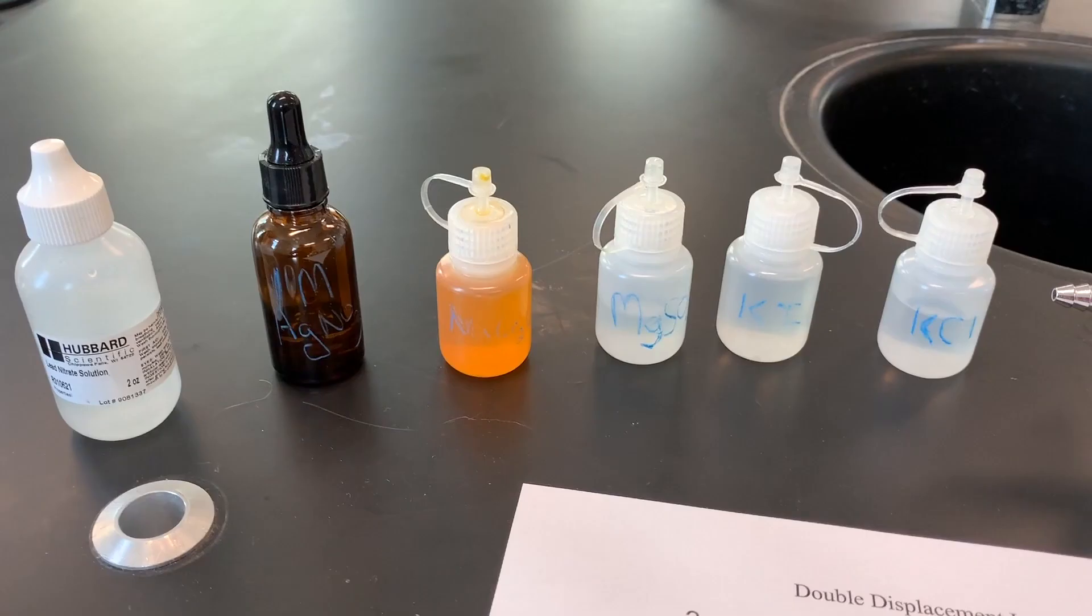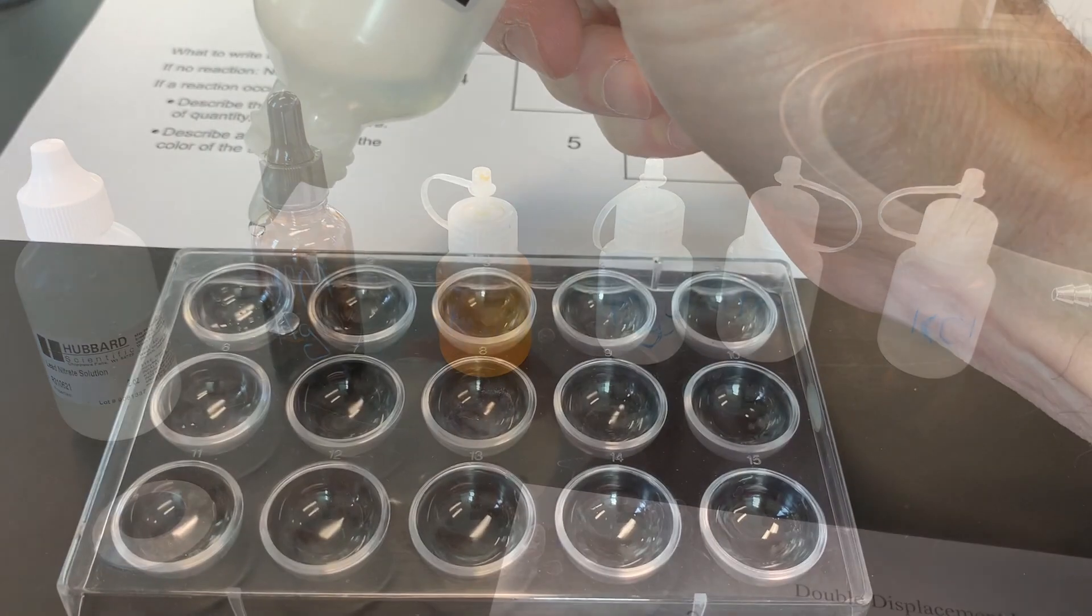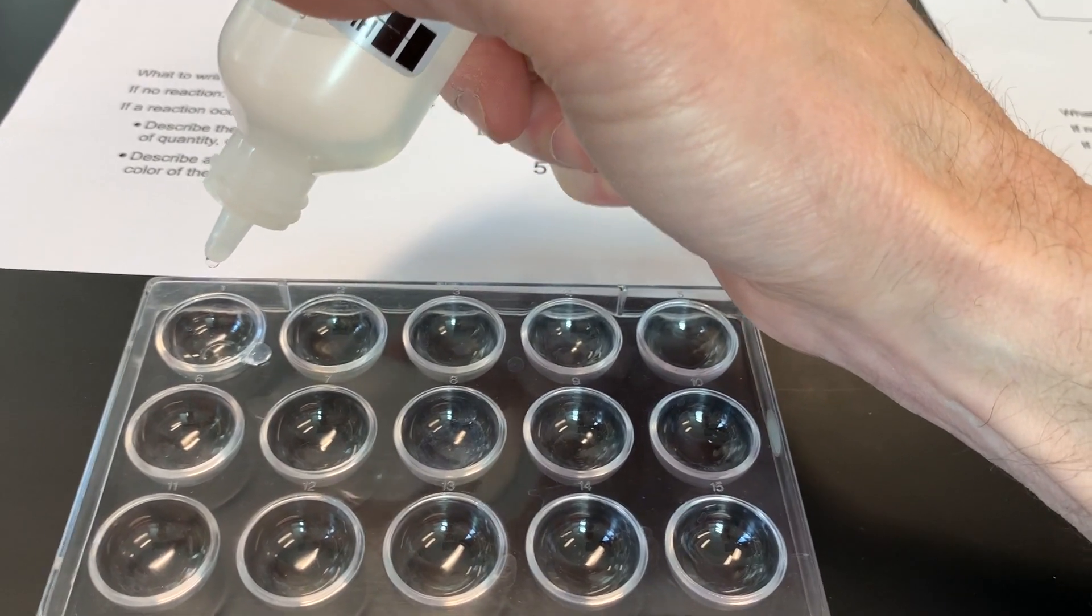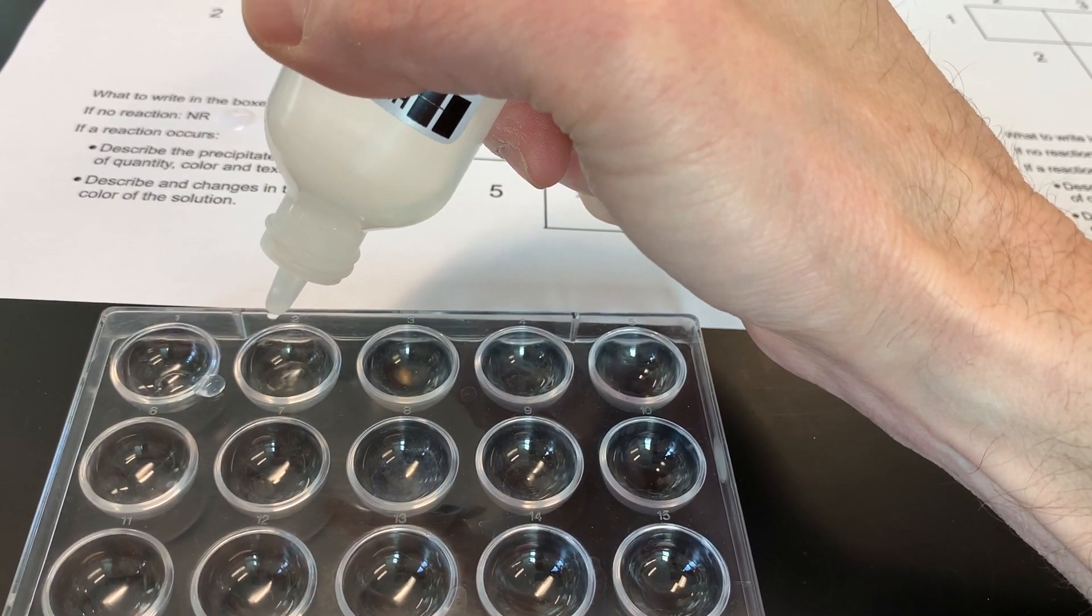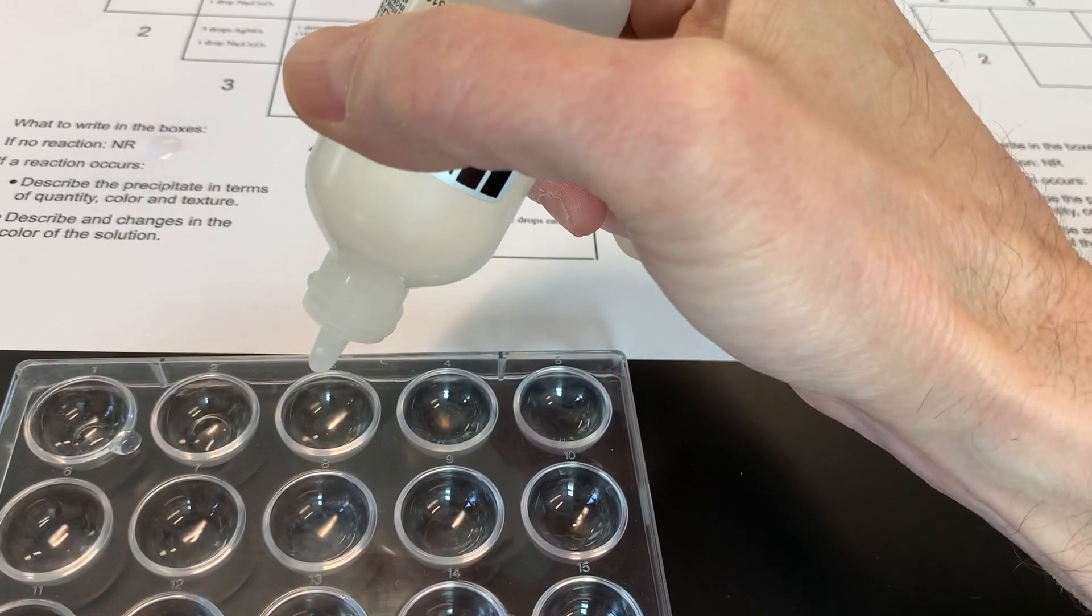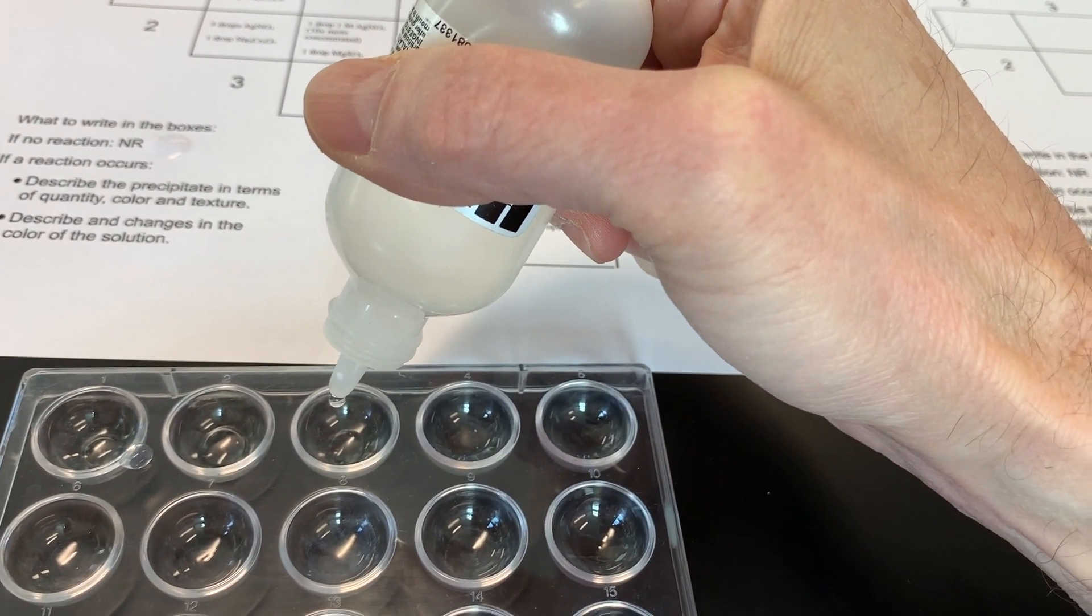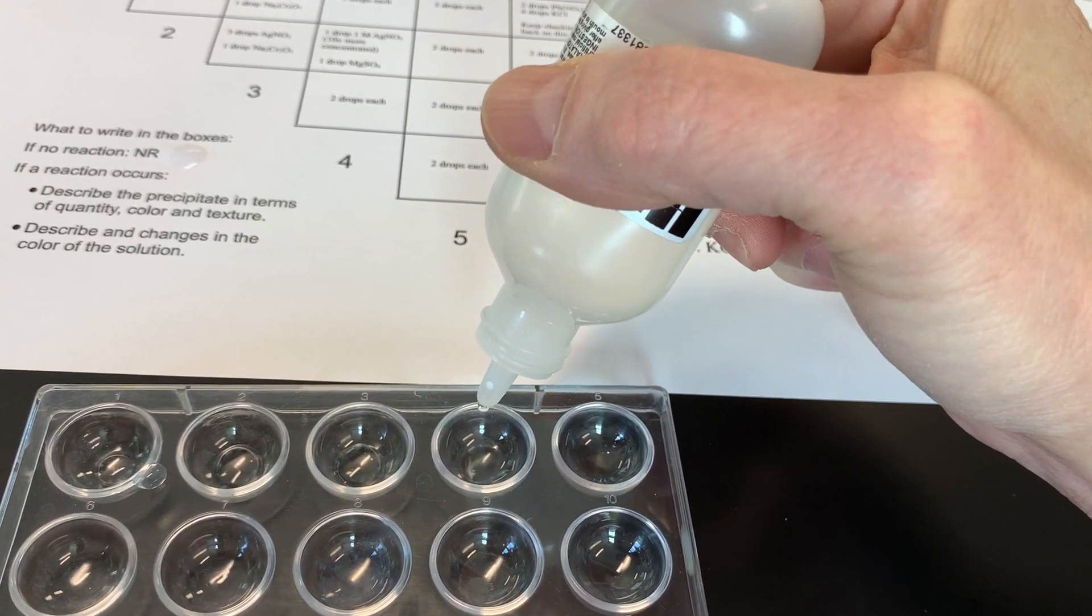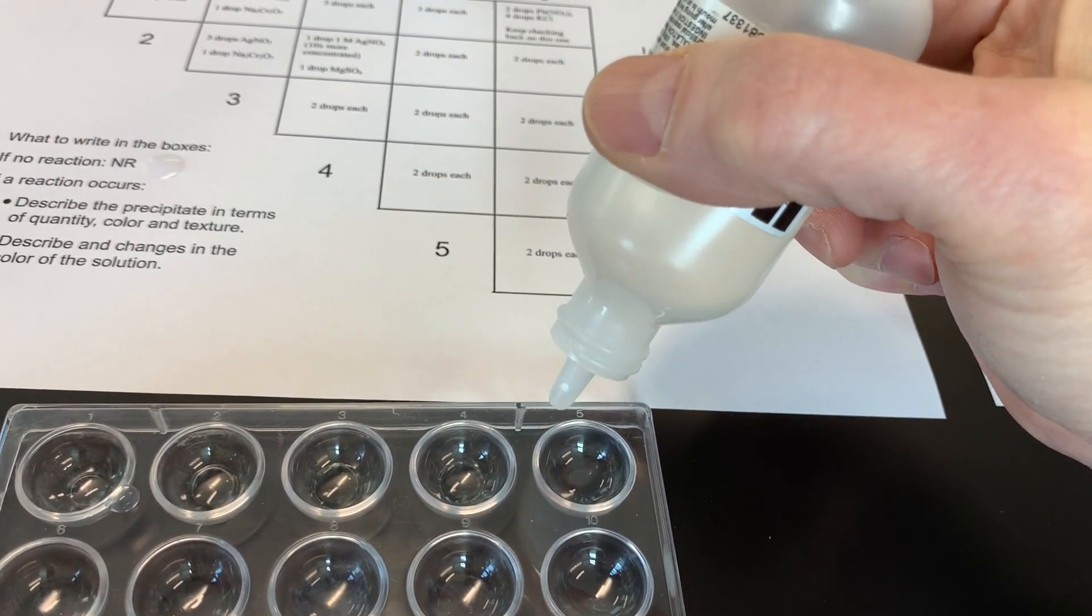The silver nitrate is in a brown bottle because it's light sensitive. Starting with the lead nitrate, we'll have two drops here, four here, three on this one—whoops, that's okay—three here, two drops over here, and two drops over here.